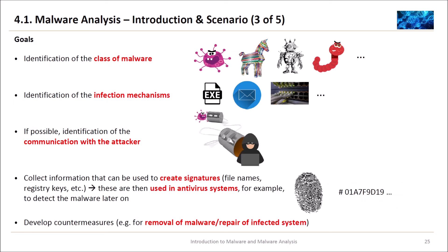What are the goals of malware analysis? First, identification of the class of malware — do we have a virus, a Trojan horse, a bot, a worm, or whatever. Then, identification of the infection mechanisms — does it spread via exe files, email, network, and so on. If possible, we want to identify the communication with the attacker. Then we want to collect information that can be used to create signatures — file names, registry keys, etc. These signatures are then used in antivirus systems, for example, to detect the malware later on — creating a digital fingerprint, a hash value of the malware.